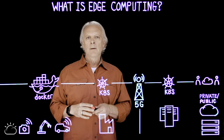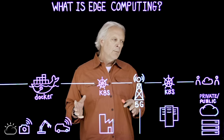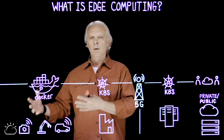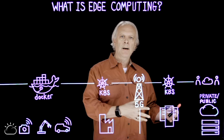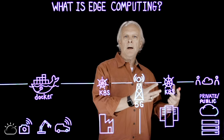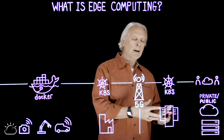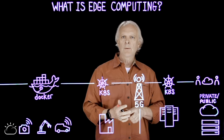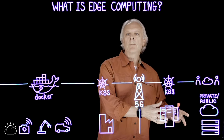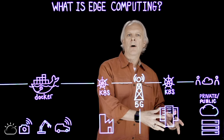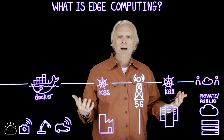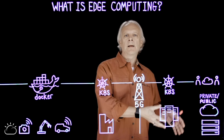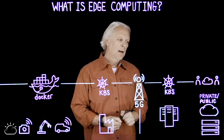If we want to make use of the edge and place workloads there, we have to start by thinking about what data ends up coming back to the cloud — both private and public clouds. Because where we put and process that data for things like aggregate analytics and trend analysis is still likely to occur in the hybrid cloud.